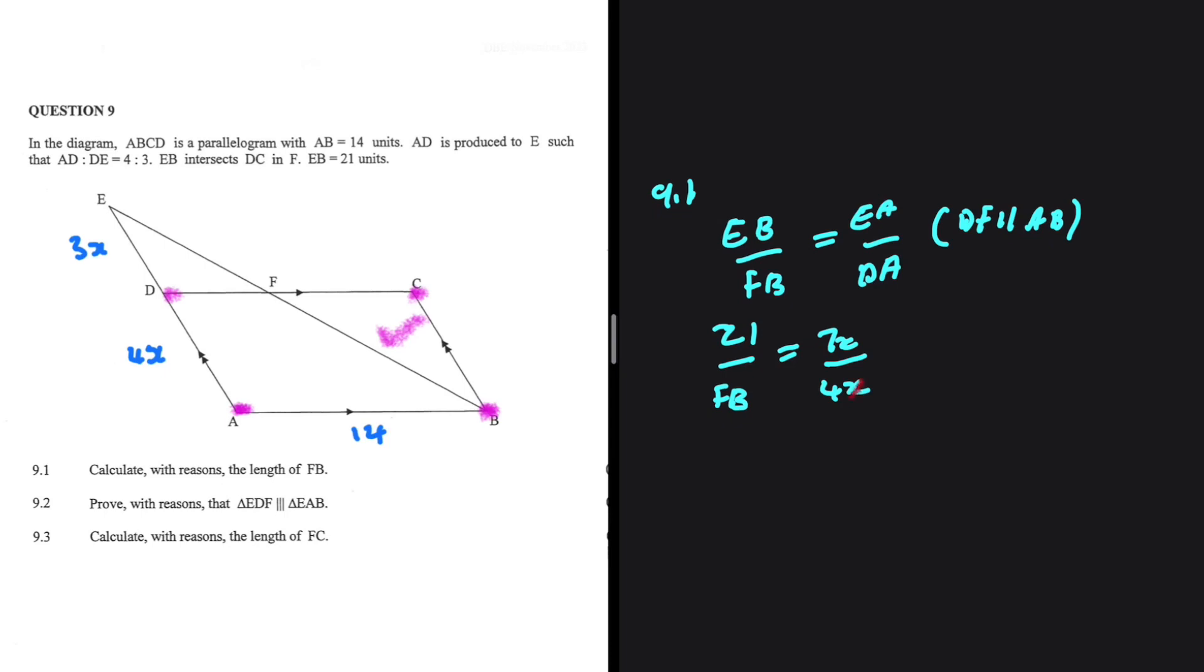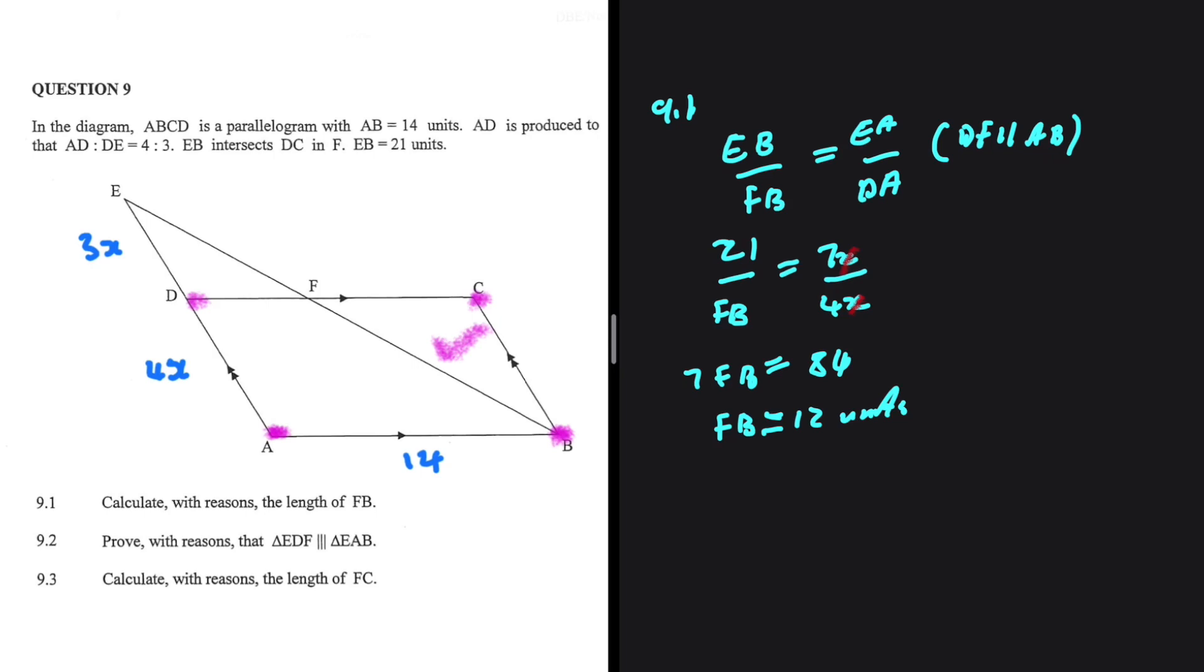We can see X and X cancel out. If we cross multiply, we get 7FB being equals to 21 multiplied by 4. So we have 7FB being equals to 84. If we divide both sides by 7, we get FB is equals to 12 units. So there we go, we have the length of FB.